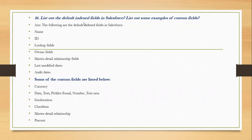List the index fields in Salesforce and some examples of custom fields. The following are the default index fields in Salesforce: Name, ID, lookup fields, owner fields, master-detail relationship, last modified date, and audit date. Some custom fields include: currency, date, text, picklist, image, number, text area, location, checkbox, master-detail relationship, and percent.